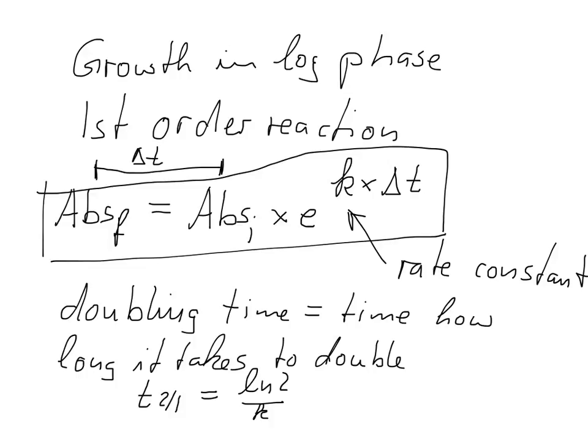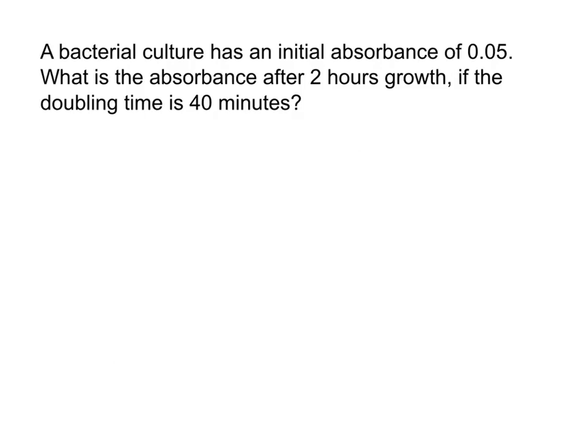So here we have a bacterial culture that has an initial absorbance of 0.05, and we want to find out what the absorbance is when we let this culture grow for two hours, given that the doubling time of this culture is 40 minutes. I'll give you a little bit of time to work it out yourself — you can stop the video here and try to figure it out.